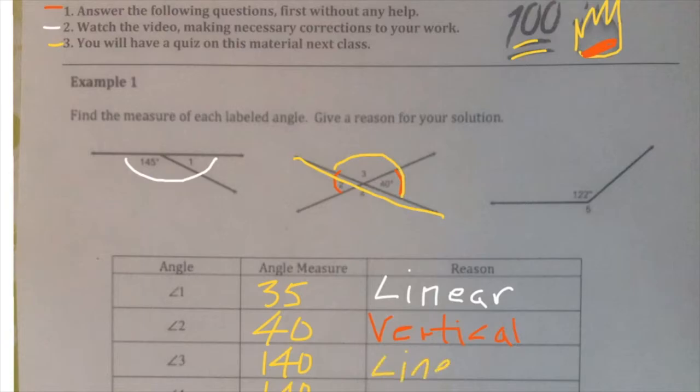Number four, angle number four, there's a few different things you could say. You could say that four is vertical with angle number three, so it must be the same. Or you could have said linear or supplementary.